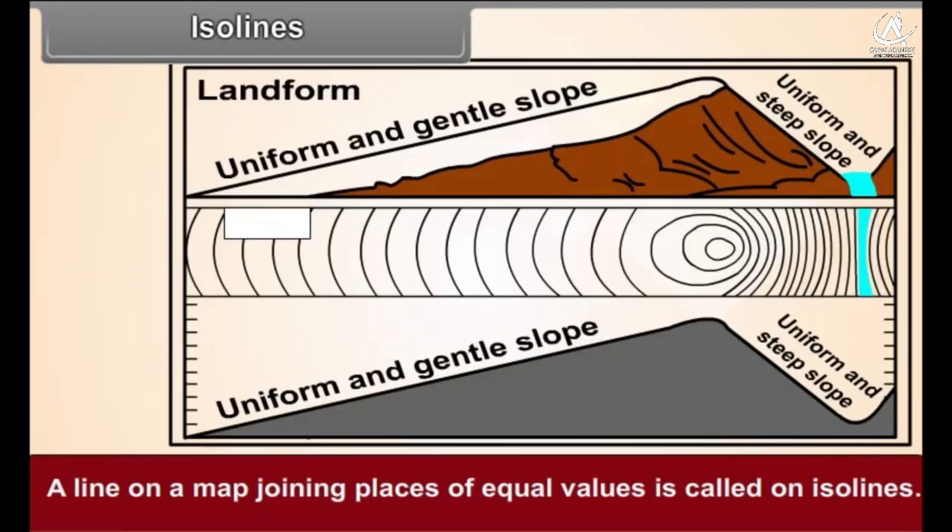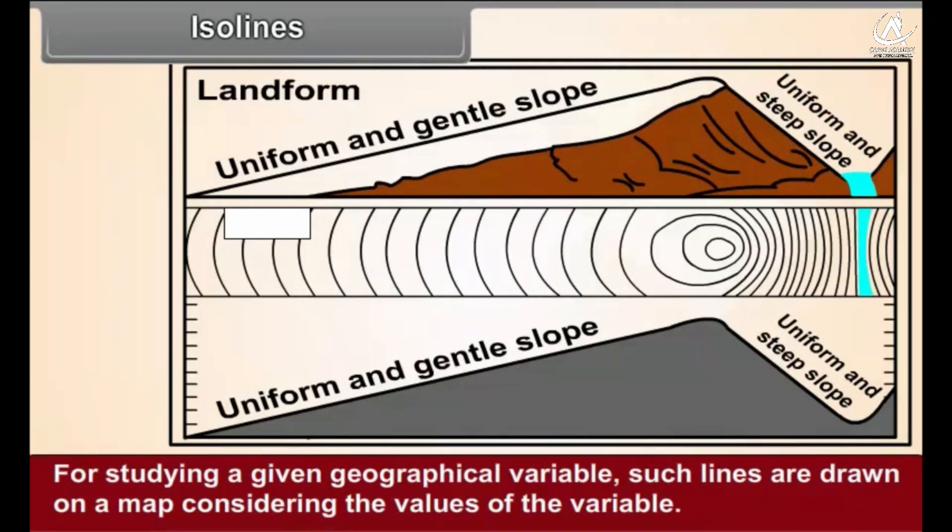Isolines: A line on a map joining places of equal values is called an isoline. For studying a given geographical variable, such lines are drawn on a map considering the values of the variable.